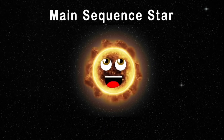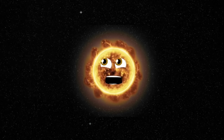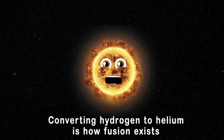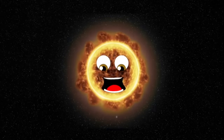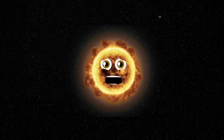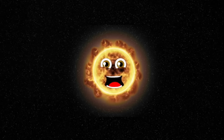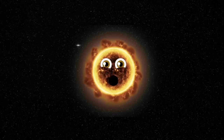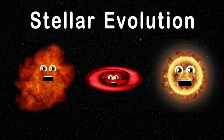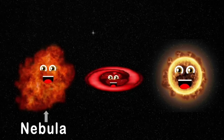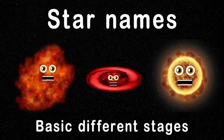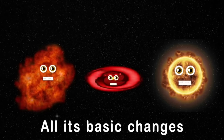As a main sequence star, just like the sun, for billions of years I will burn, converting hydrogen to helium through nuclear fusion. The fusion wants to blow me apart, but gravity pushes in with equal power, keeping me burning. There are many different kinds of stars throughout the universe. This is the stellar evolution of a star in the universe — a nebula is the beginning of a star before its birth.